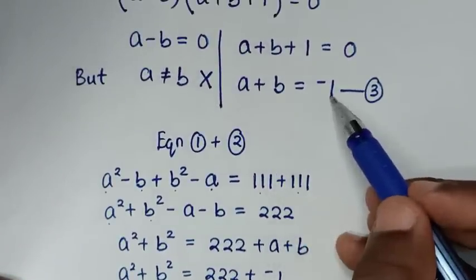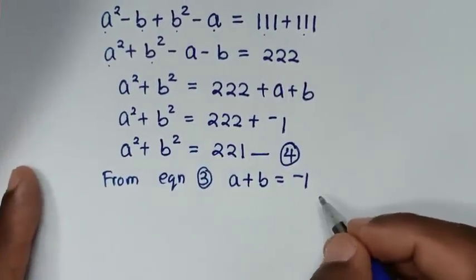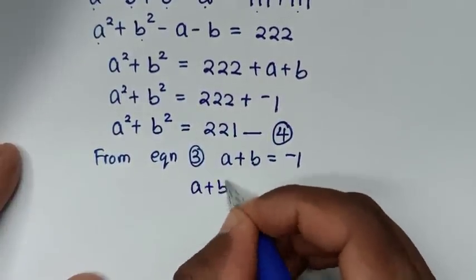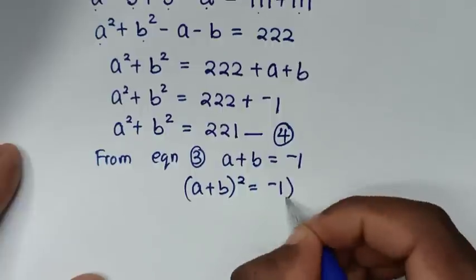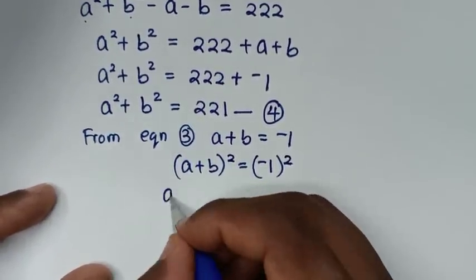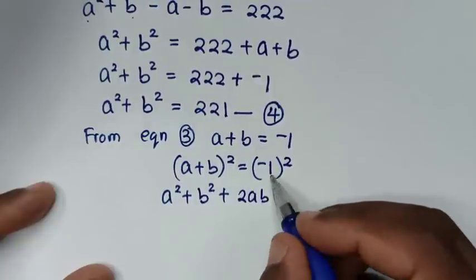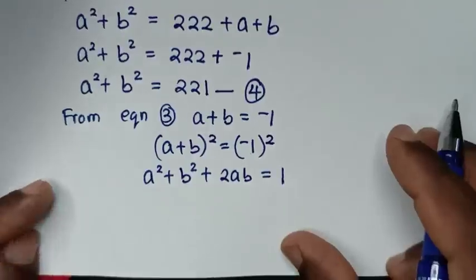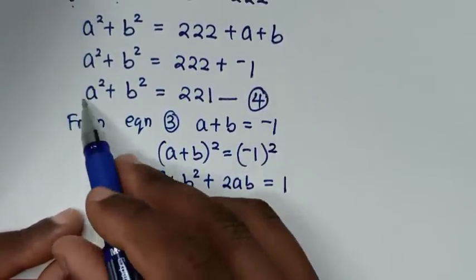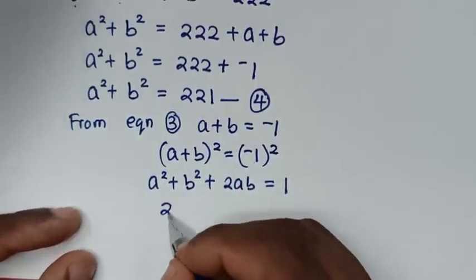We recall equation 3: a plus b equals negative 1. Squaring both sides gives (a plus b)² equals (negative 1)², which is 1. Expanding the left side: a² plus b² plus 2ab equals 1. From equation 4, a² plus b² equals 221, so we substitute 221.